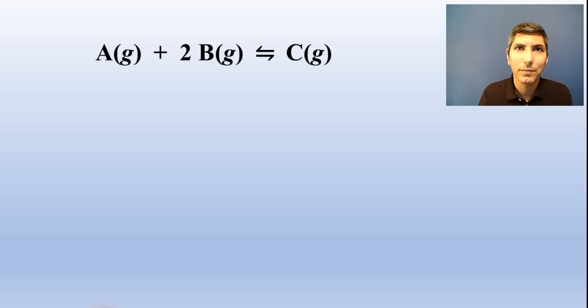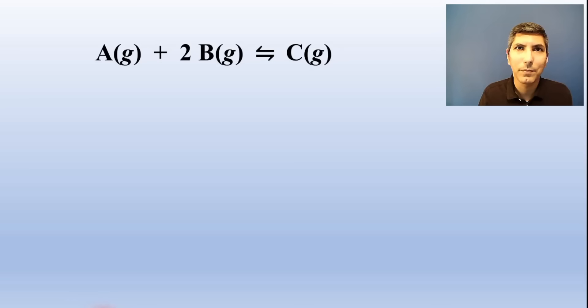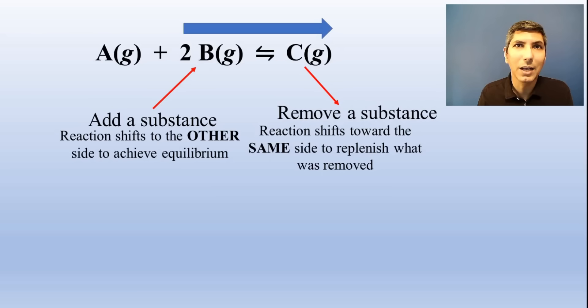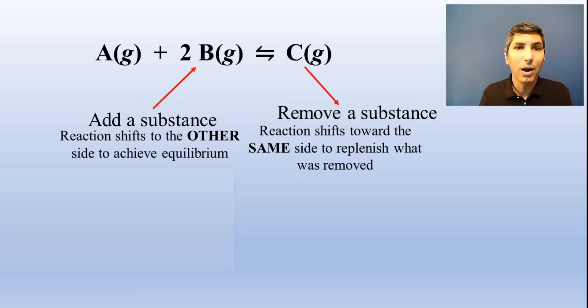If we have a system at equilibrium and we disturb that system, the system will readjust itself to get back to equilibrium. So if we add a substance, that substance will react with something on its side of the equation, and the opposite side of the reaction will increase, decreasing the side to which you added the substance. And if you take something away, the other side will react, causing those concentrations to decrease. And the side on which you remove the substance will increase.